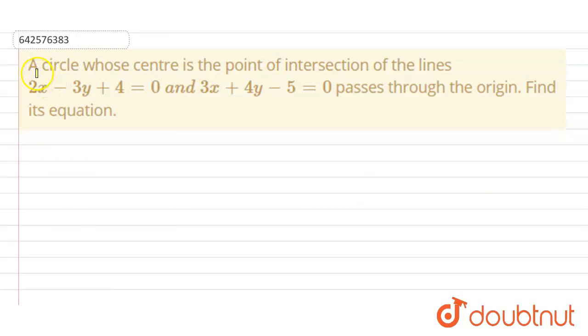Hello students, our question is: a circle whose center is the point of intersection of the lines 2x - 3y + 4 = 0 and 3x + 4y - 5 = 0, and the circle passes through the origin. Then find its equation. This is our question students.